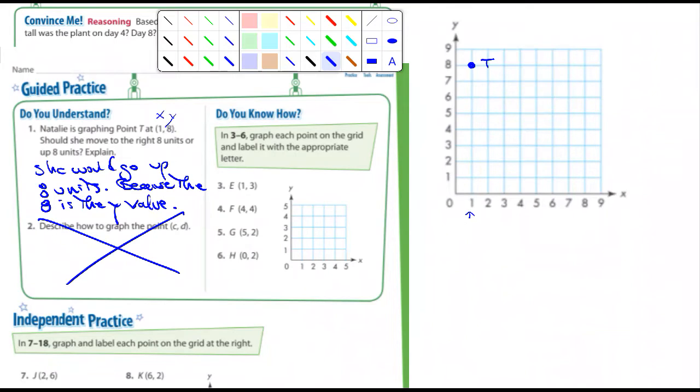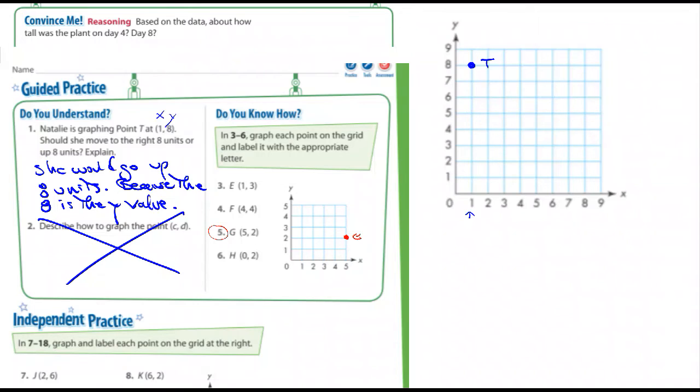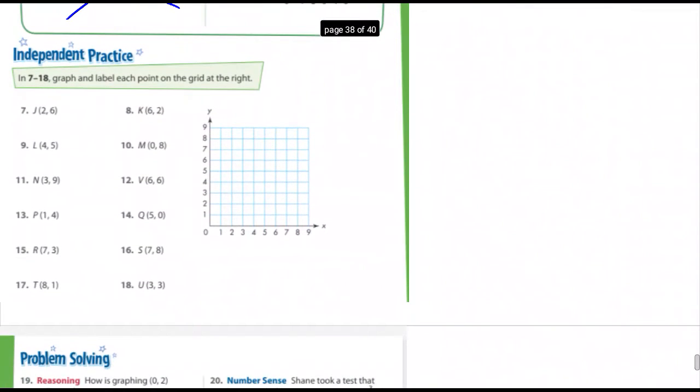All right. Three through six. Graph each point on the grid and label it with the appropriate letter. So I'm going to do number five here. Letter G. Five, two. I'm going to go over five and up two. I'm going to put a dot right there. And I'm going to label it G. And you guys do the same thing with three through six. Good.